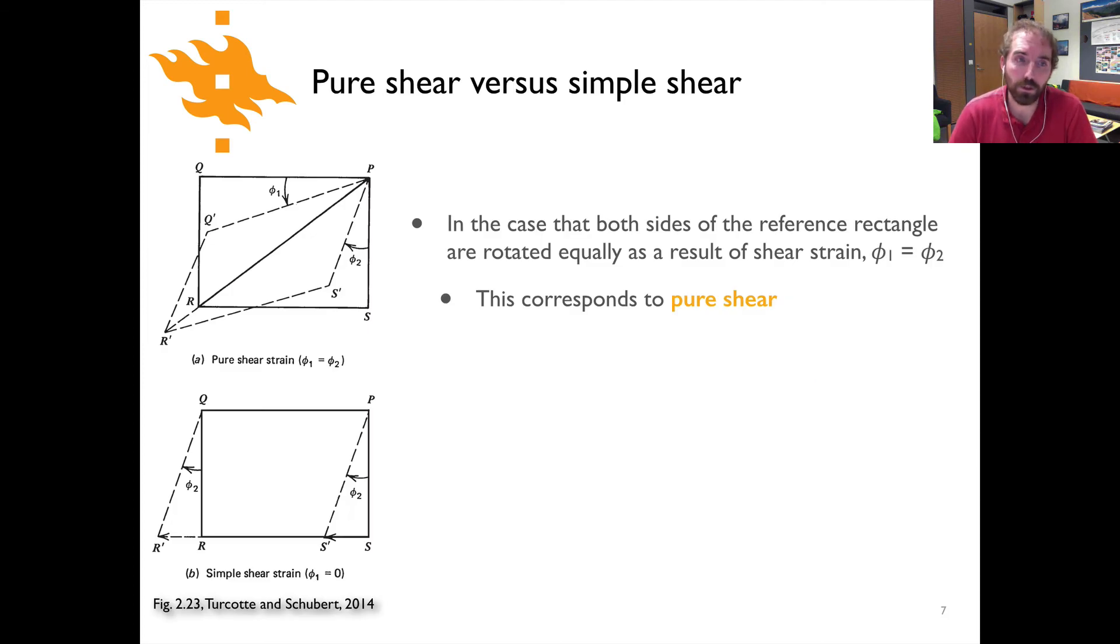When we talk about shear strain, you can divide shear strain into two different simple end-member types. The first is what's pictured up above and that is called pure shear. And in this case, you can see that both sides of this reference rectangle are rotated equally as the result of shear strain. And in other words, phi_1 is equal to phi_2 in this case. So the rotation from the original horizontal line here to its final position is equal to the same rotation that takes place between the vertical line and this inclined dashed line here. And you can see then the geometry takes on something like what's dashed out here. So that's a case where we have pure shear where phi_1 and phi_2 are equal.